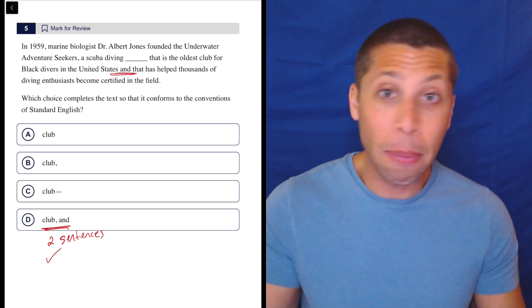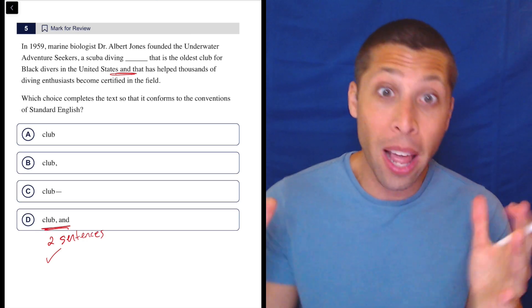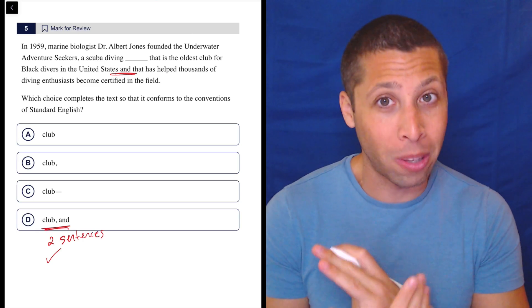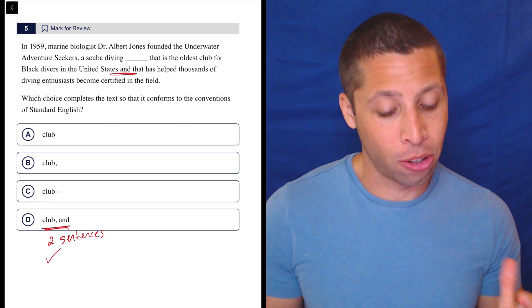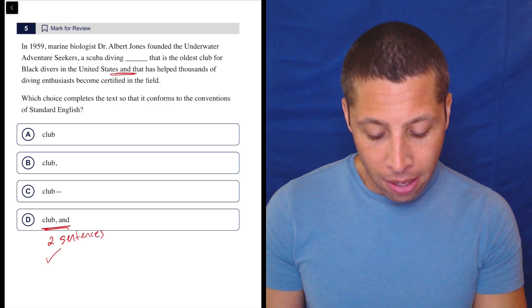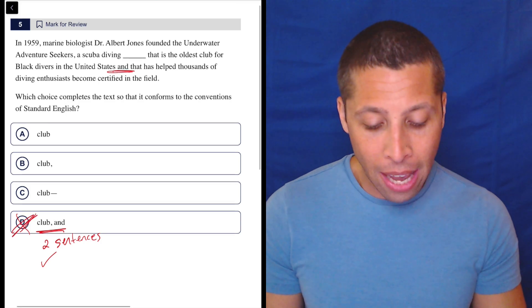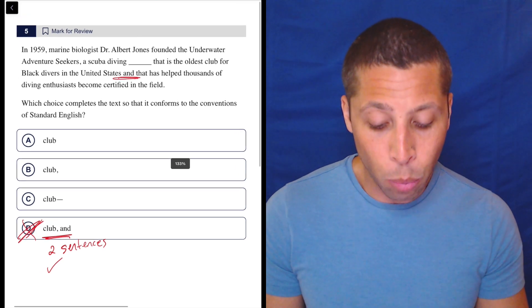Otherwise, we would need a comma to join the two complete sentences. And then we'd have like three sentences all joined with 'and's. That would be weird, but I guess it's doable, but that's not what's happening here. So that's telling me these are not two sentences. Something else is going on here.